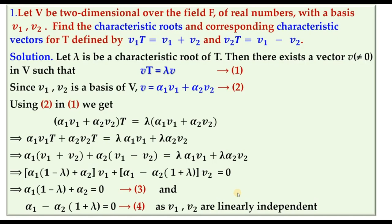Solved Problem 1: Let V be a two-dimensional vector space over the reals with basis v₁, v₂. Find the characteristic roots and corresponding characteristic vectors of T, which is defined in a specific way. Let λ be a characteristic root; then there exists v = av₁ + bv₂ such that vT = λv. Substituting the definitions of v₁T and v₂T and collecting terms in v₁ and v₂, since v₁, v₂ are linearly independent, each scalar coefficient equals zero, giving equations 3 and 4 in α₁ and α₂.